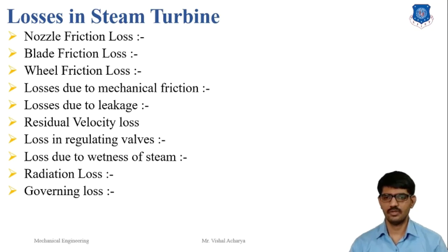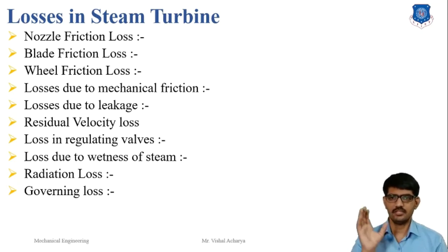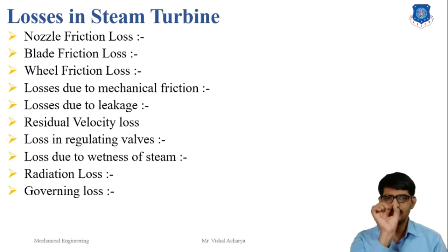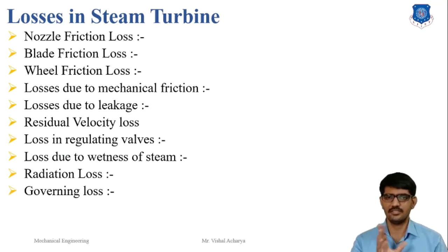First is the nozzle friction loss. This is a very important loss for the impulse turbine. When steam passes through the nozzle, friction loss occurs and the formation of eddies takes place. In the nozzle this is accounted for by the nozzle efficiency, which is the ratio of the actual enthalpy drop to the isentropic enthalpy drop.